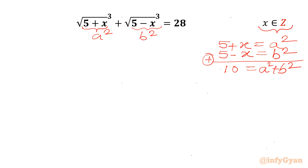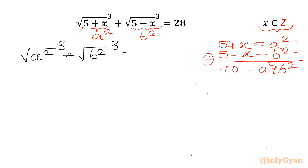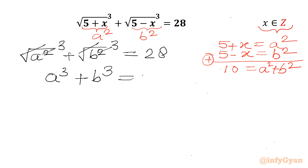Now I will check our original equation. I can write the square root of a squared, whole cubed, plus the square root of b squared, whole cubed, equal to 28. The square root and square cancel, so I can write a cubed plus b cubed equal to 28.